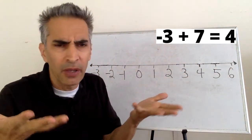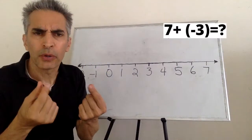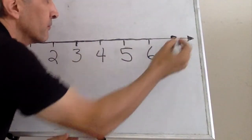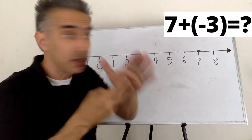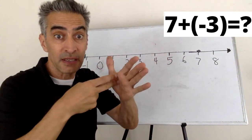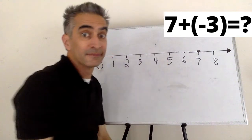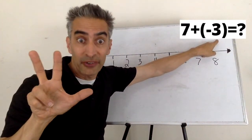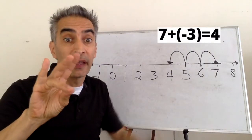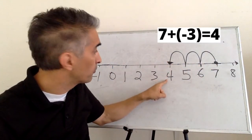Notice that this problem is the same as 7 added to negative 3. We start with 7 — there it is. This addition sign means move to the right, but this negative sign means go the opposite direction — so we head to the left. How many spaces? 3. 1, 2, 3. 7 plus negative 3 equals 4.